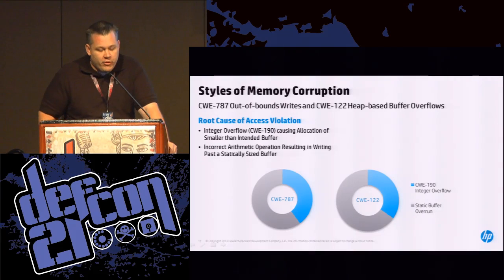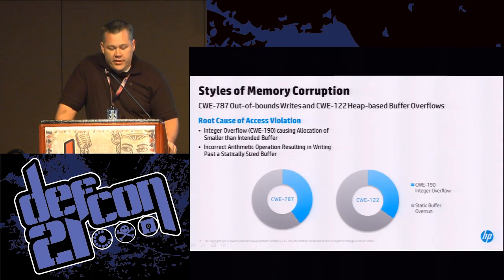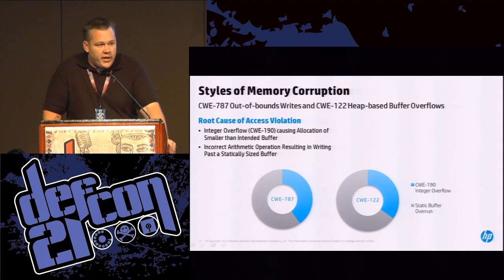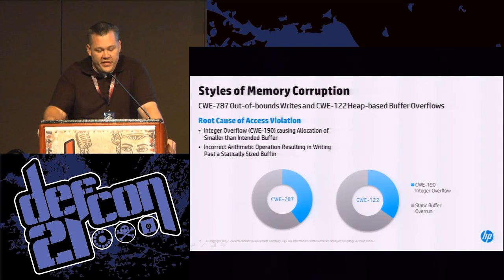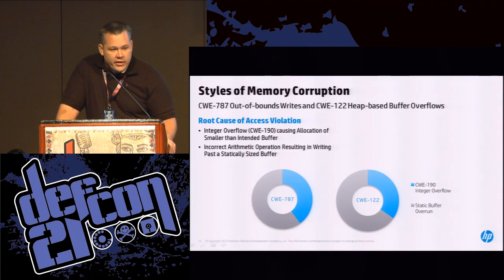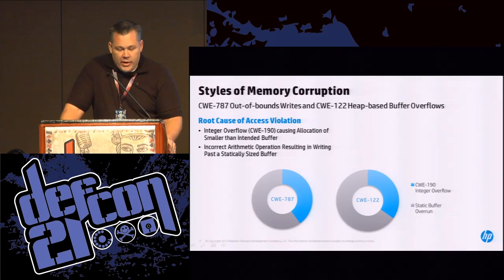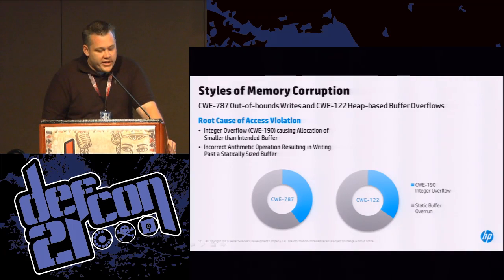If we look specifically at memory corruption-style vulnerabilities — out-of-bounds writes and heap-based buffer overflows — there are really two causes for the access violations in those two classes. We found that a third of them were caused by integer overflows, causing allocation of a smaller-than-intended buffer, and the rest were incorrect arithmetic operations.